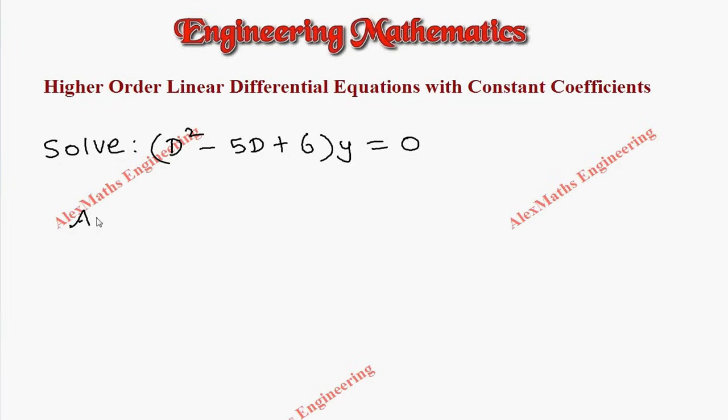As a first step, we have to write the auxiliary equation where we write in terms of m: m² minus 5m plus 6 equal to 0.